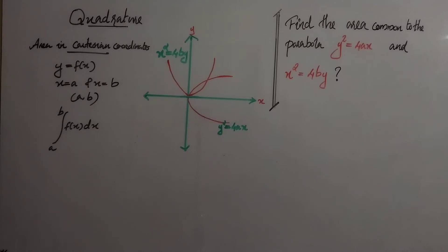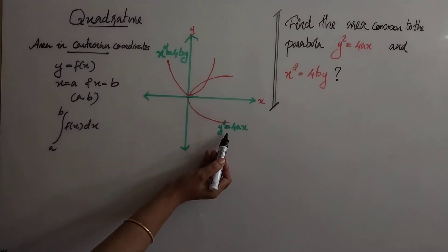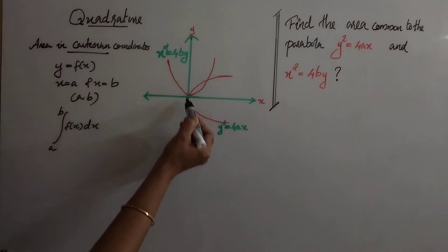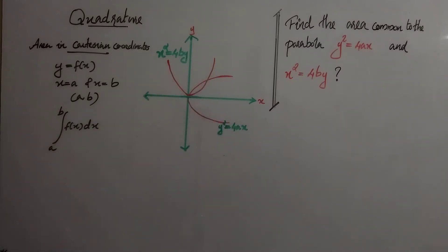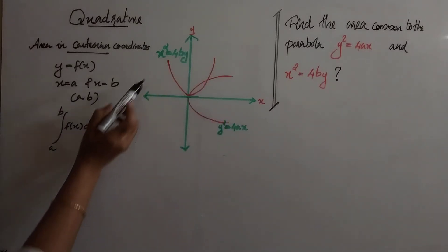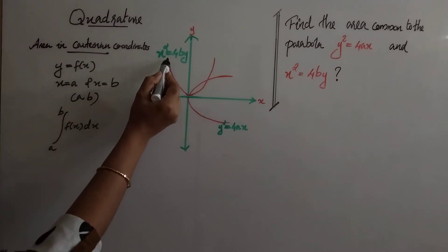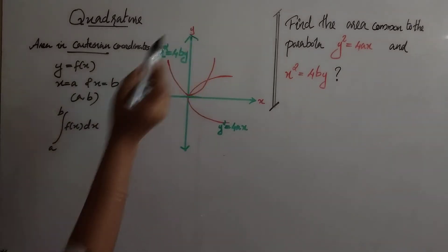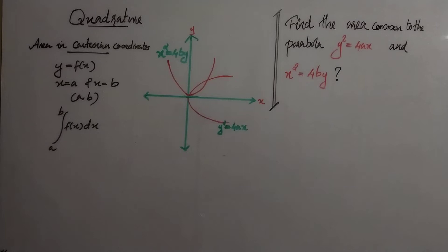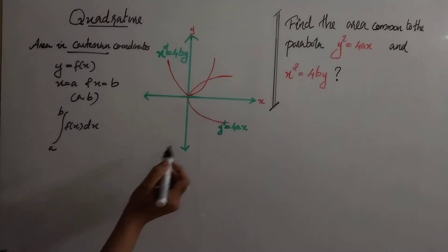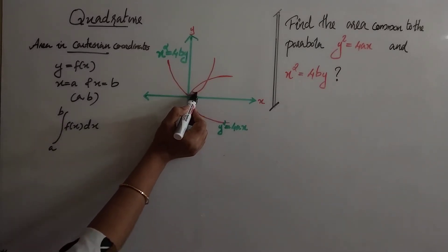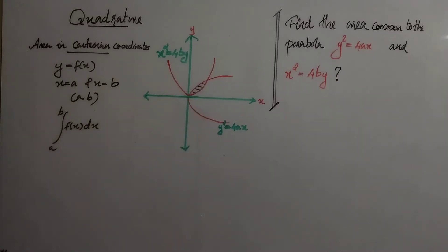Here we have to find the area common to the parabola y² = 4ax and x² = 4by. The parabola y² = 4ax is symmetric about the x-axis, and x² = 4by is symmetric about the y-axis. The area common to these two parabolas is the shaded region.